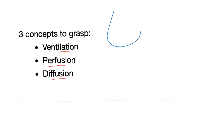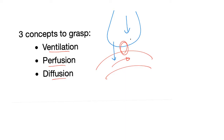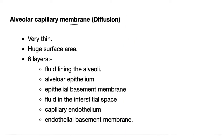Ventilation gets air into the alveoli. Perfusion gets blood into pulmonary arteries close to the alveoli. Diffusion: oxygen goes in and CO₂ goes out. The alveolar membrane is very thin with a huge surface area — like a tennis court. It has six layers.